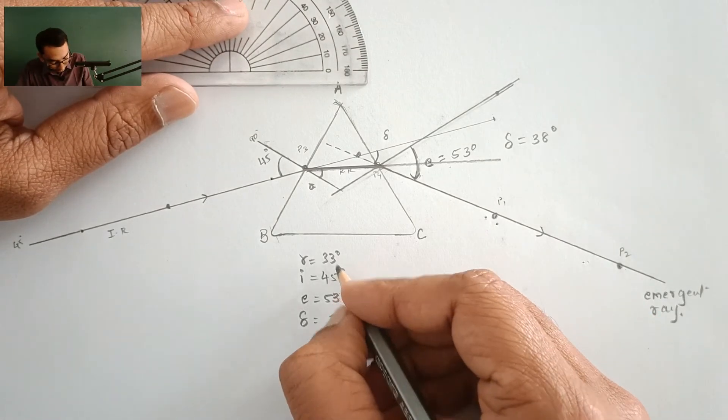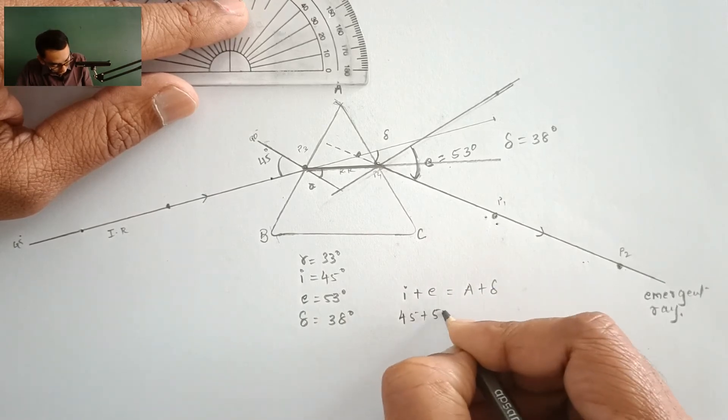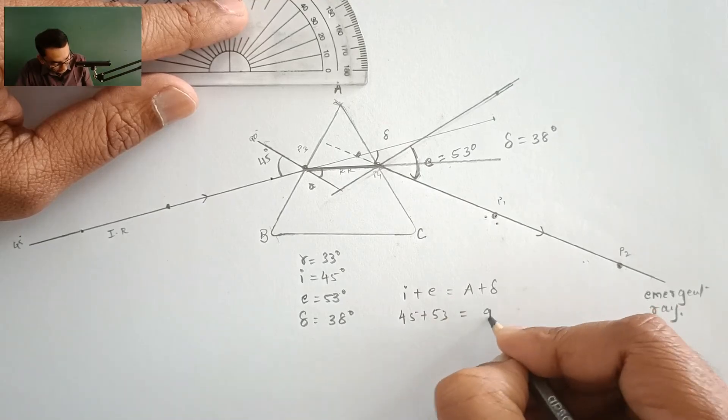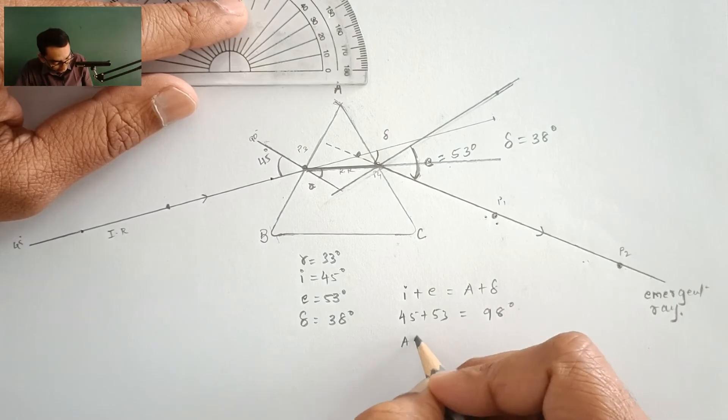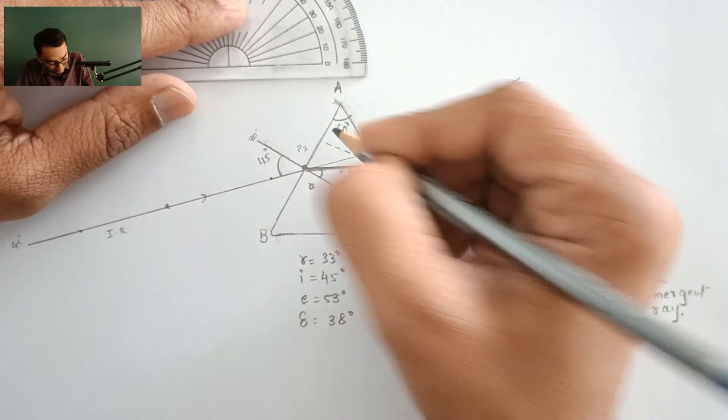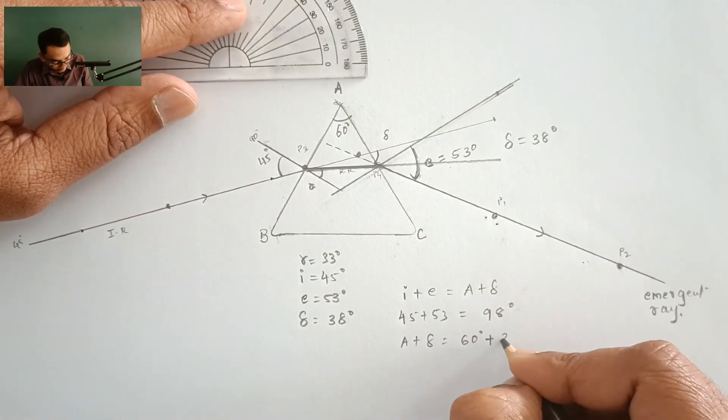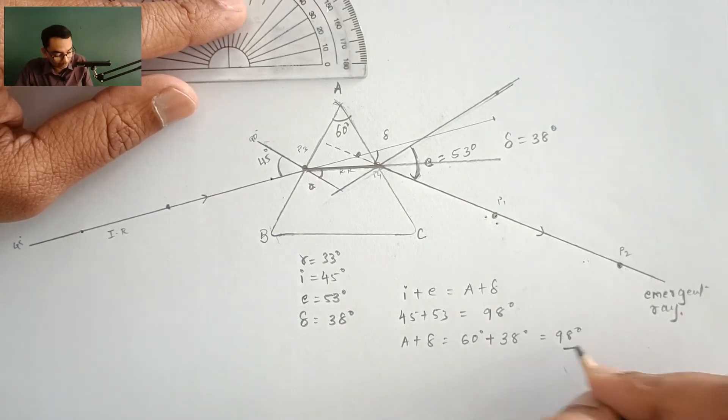So I is 45 degrees plus E, so that is 45 plus 53. Similarly this answer turns to be around 98 degrees, whereas A plus delta is equal to the angle of prism is 60 degrees because it is an equilateral triangle. So 60 degrees plus 38 degrees, so this is perfectly 98 degrees.